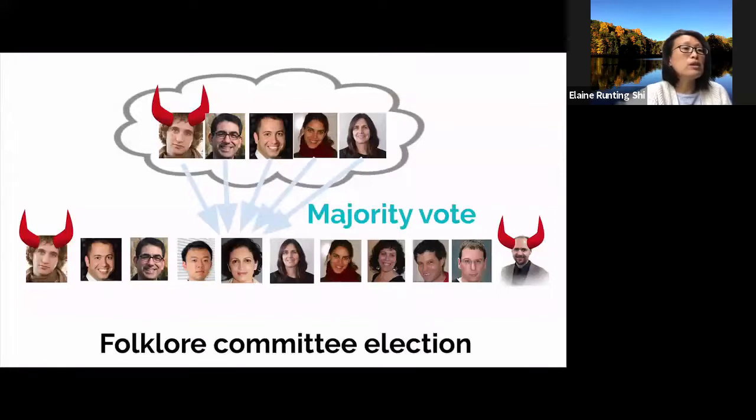Okay, for example, if overall 51% of the players are honest, then the committee will have honest majority with all but negligible probability.